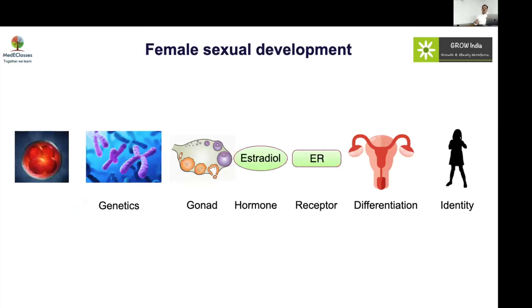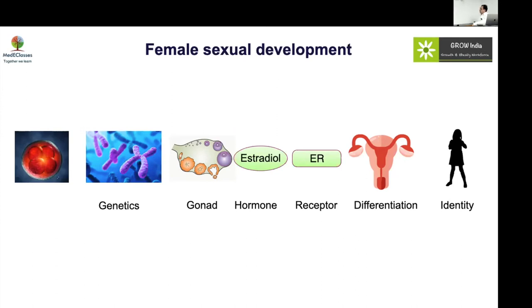Female sexual development is often said to be a passive process, but that is not true — many active genes are involved, which is why autosomal problems also cause DSD. The default developmental mode is female: SRY gene deletion, complete steroidogenic defects, or complete androgen insensitivity all result in XY individuals developing as female. Problems in ovarian development, estrogen production, or estrogen action present with delayed puberty and primary amenorrhea — not DSD.